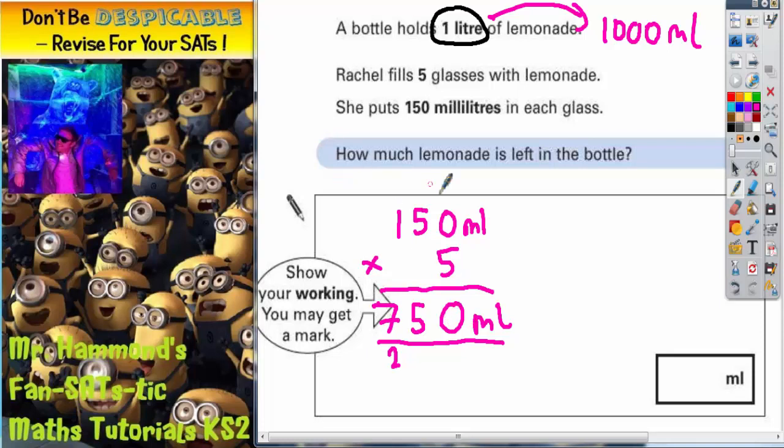Now it says how much lemonade is left inside the bottle. Remember we have already said that the bottle contains 1000 milliliters and 750 milliliters. So if we find the difference between 1000 milliliters and 750 milliliters, we will find what is left in the bottle. And to find the difference, it's another column method but this time it's a subtraction. Anytime you want to find the difference, do a subtraction.